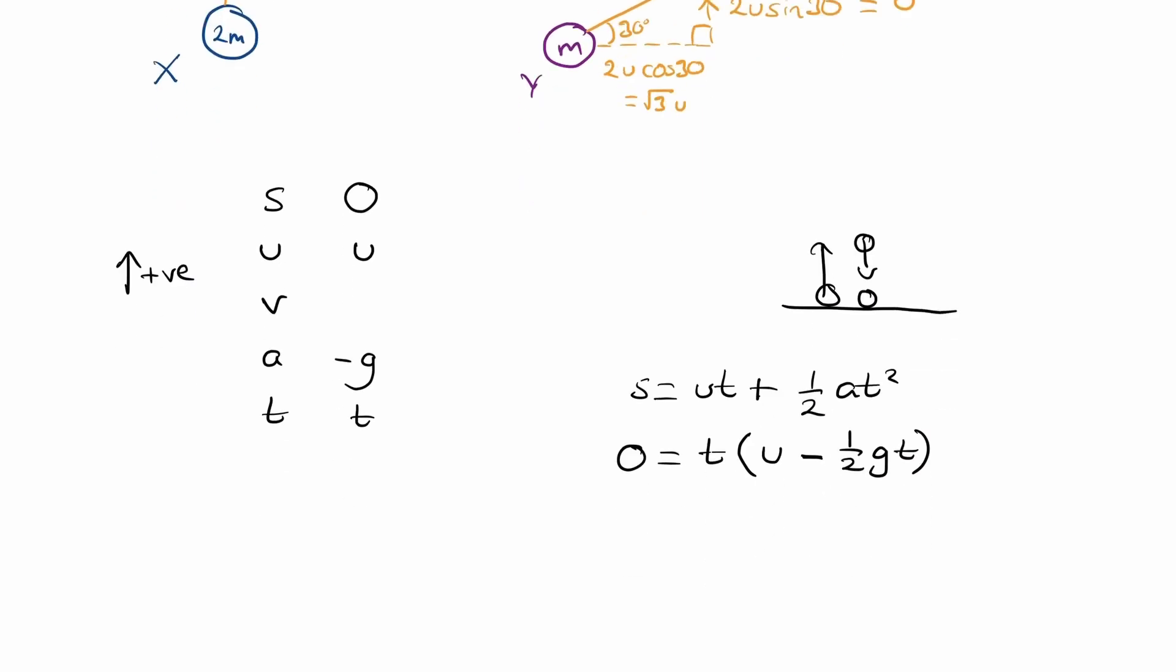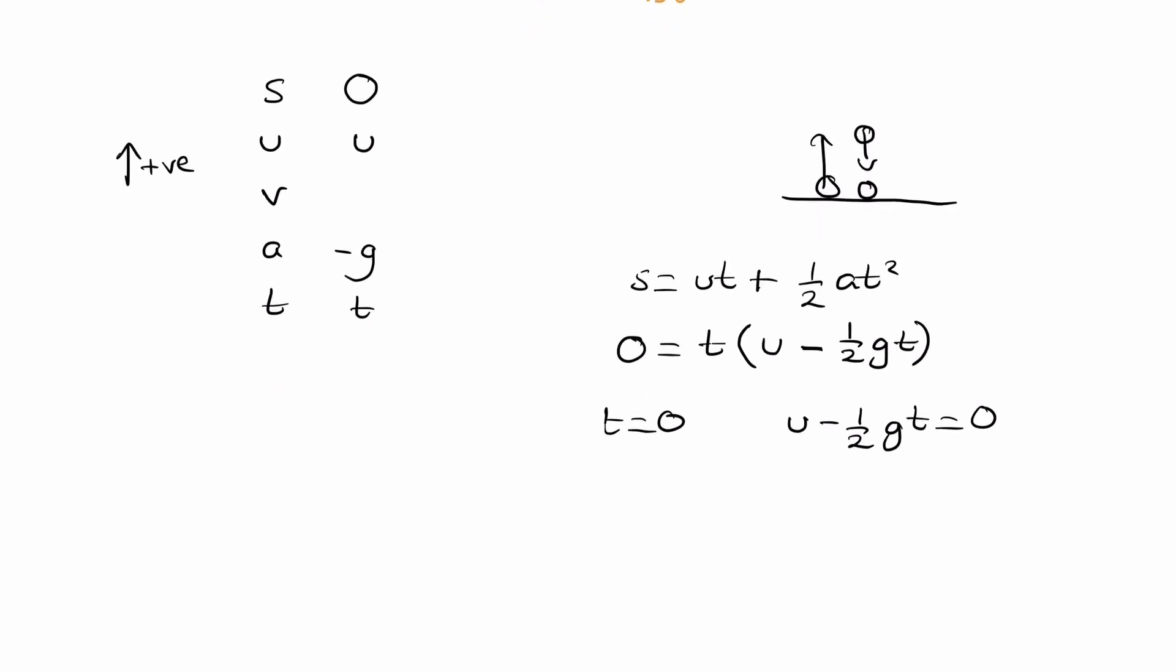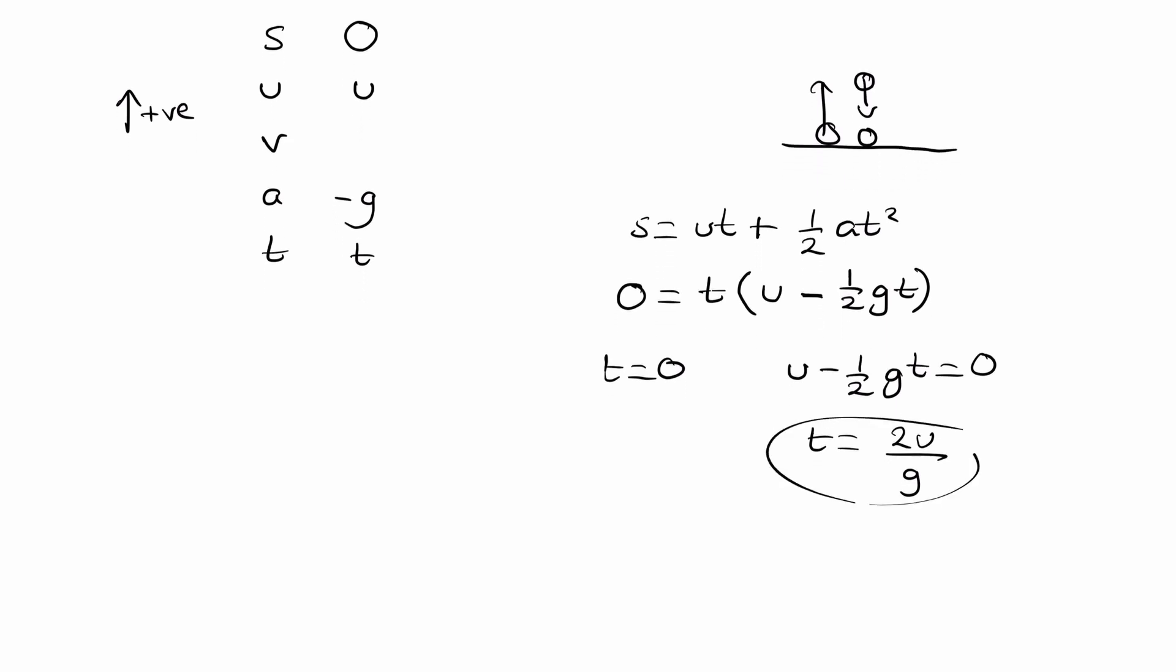You get two solutions from this. We get t is equal to zero. And we also end up with the second bracket being equal to zero. So u minus a half g t is zero. And when we rearrange this for time, we'll end up with 2u over g. So what we see is that the time of flight is determined by the initial speed only. Acceleration due to gravity is a constant. The initial vertical velocity, which we're calling u, that's the initial vertical velocity, is the only thing that determines the time of flight.